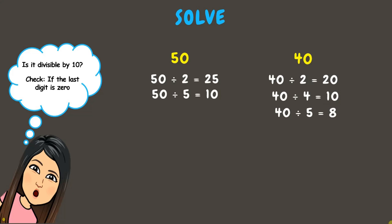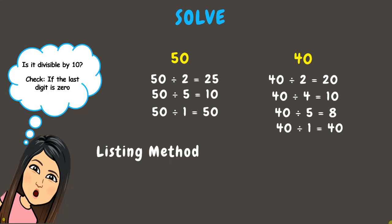Lastly, please note that all numbers are divisible by 1. 50 divided by 1 gives us the other factor, 50, while 40 divided by 1 gives us the other factor, 40. Now let us list down all the factors. For 50, we have factors 1, 2, 5, 10, 25, and 50.